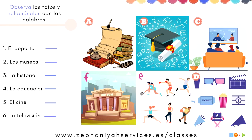Now, let's take a look. Observa — I want you to observe. Observa las fotos y reláconalas con las palabras. So, tenemos fotos — we got pictures here — y palabras. I want you to take a moment, even if you need to pause this, and observe the photos and relate them to the words, las palabras.